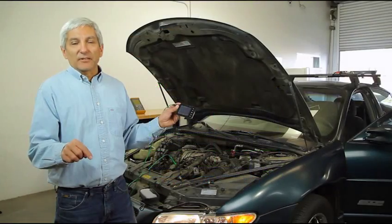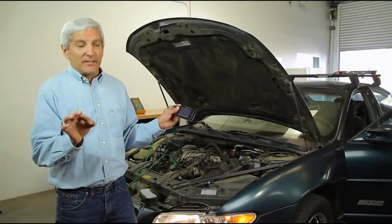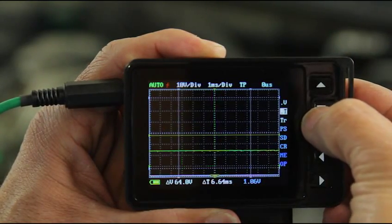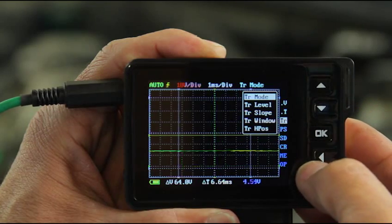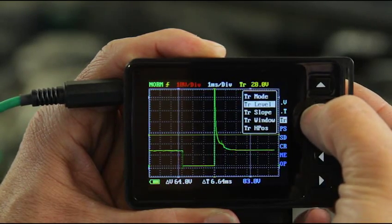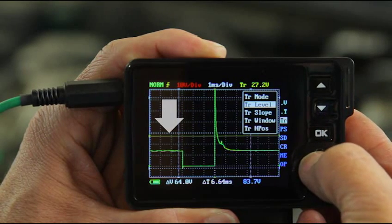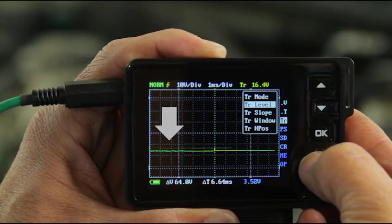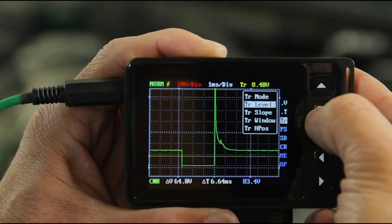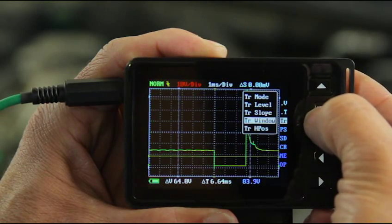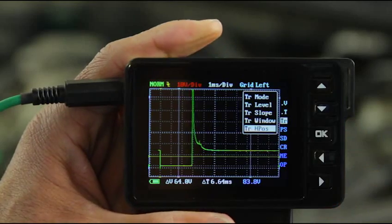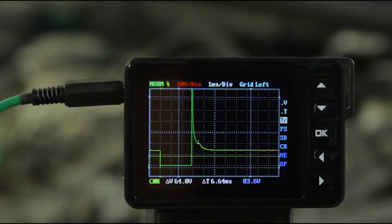Now we can take it to another step. I'm going to fine tune it now. I'm going to hit the OK button to bring up the menu and go to TR which stands for trigger. Hit my left right arrow keys to go to normal. I'm going to go to trigger level and bring my trigger level down by hitting my left arrow key. I'm going to trigger slope and change it to positive slope. One more adjustment is I'm going to set my trigger horizontal position to the left. And now look at my injector signal. Pretty awesome isn't it?